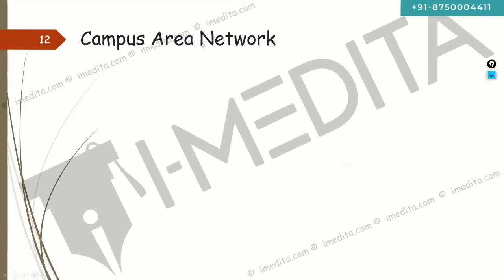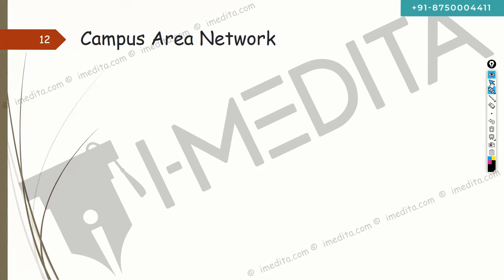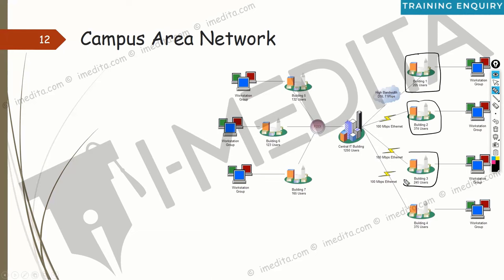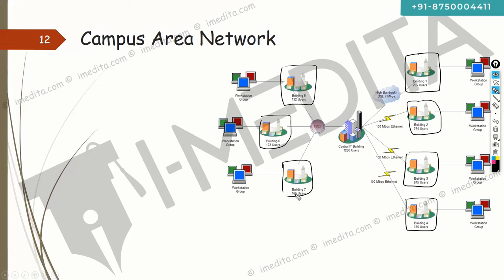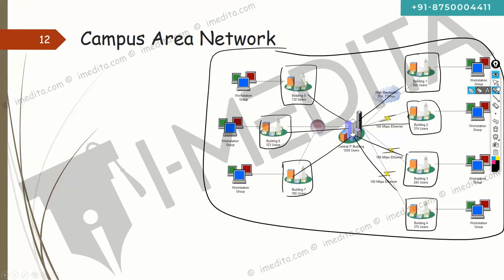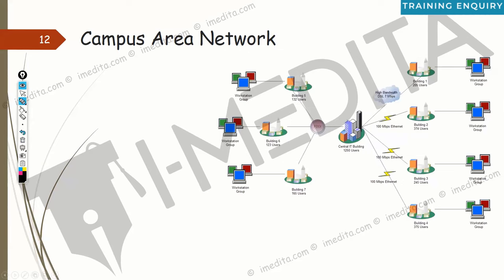Campus area network is when you have multiple buildings — maybe a university or office campus — and connect them all together without using a service provider. You lay down your own cables between buildings. So campus area network is effectively a bigger version of LAN, since you're still not relying on an external service provider. The aim is to provide connectivity to employees or students within a campus.